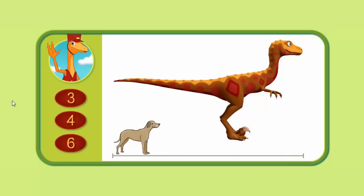How many dogs long is this Deinonychus? Three, four, or six? Three, four, six, four.